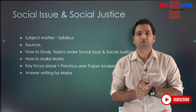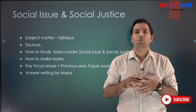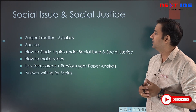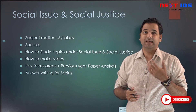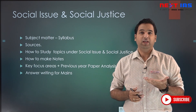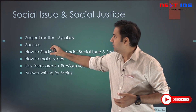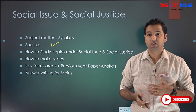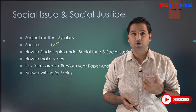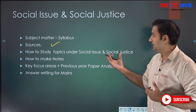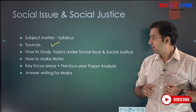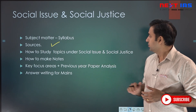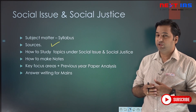The first question is about what is the subject matter of social issues and social justice. Second is a pertinent question about sources of study — which books, periodicals, and journals to refer to, and which standard materials are available. Third is how to study the topics under social issues and social justice.